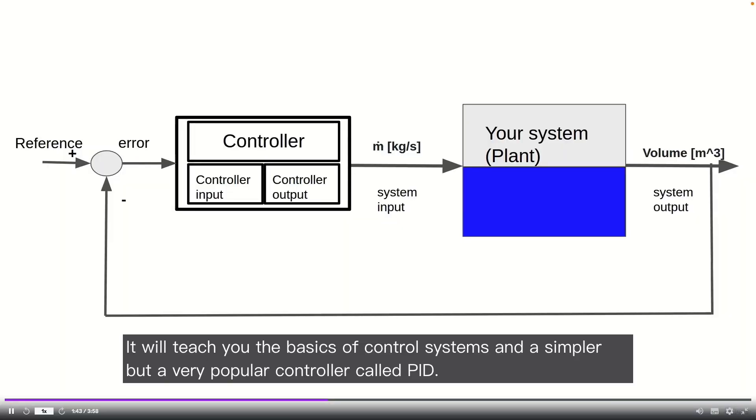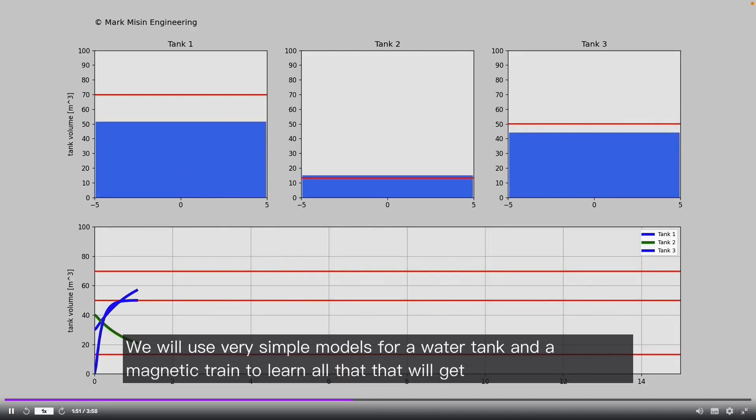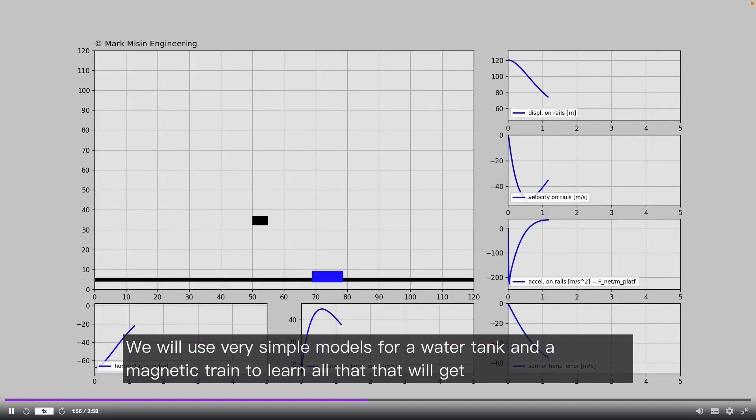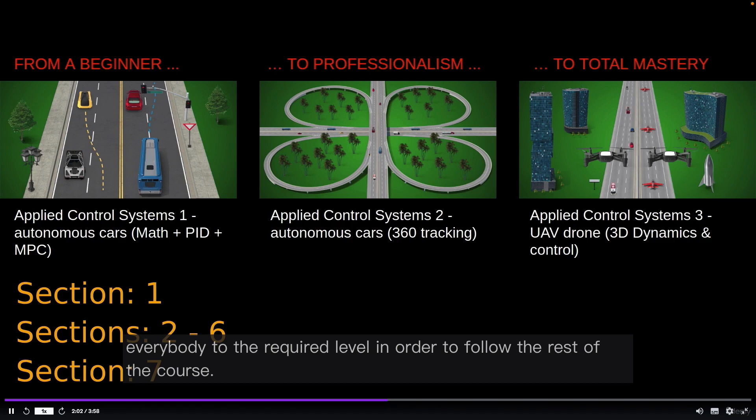The first section will be a control systems crash course from the beginning. It will teach you the basics of control systems and a simpler but very popular controller called PID. We will use very simple models for a water tank and a magnetic train to learn all that. That will get everybody to the required level in order to follow the rest of the course.